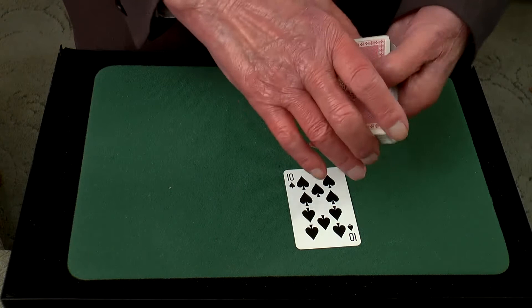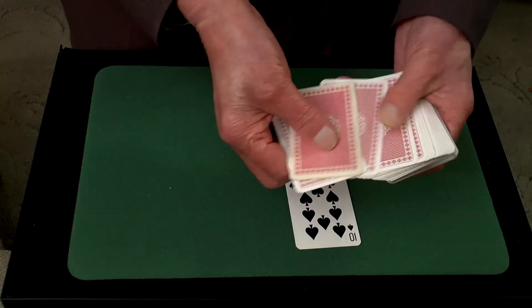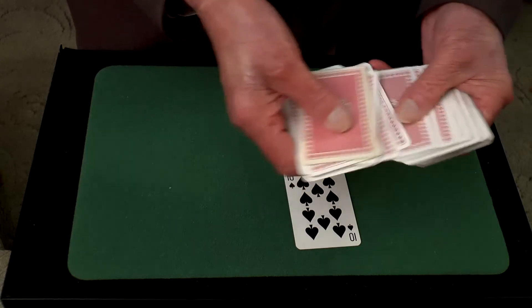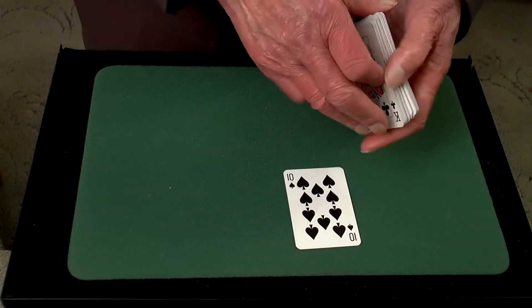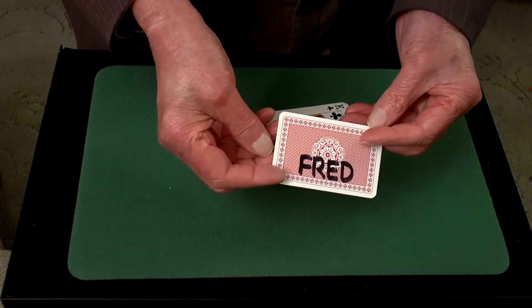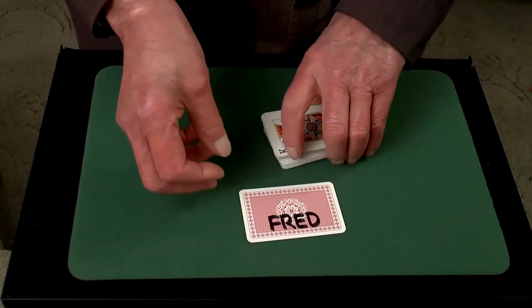Then you can say, 'I want you to notice there's nothing unusual written on the backs of these cards, there's nothing there at all.' And you run through them like so, and yet it turns out that you have in fact named their freely chosen card Fred. And that is it.